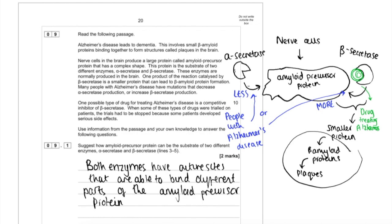So let's read it and highlight the important parts. Alzheimer's disease leads to dementia and involves small beta amyloid proteins binding together to form plaques in the brain. Nerve cells in the brain produce a large protein called amyloid precursor protein with a complex shape. This protein is a substrate of two different enzymes, alpha and beta secretase.